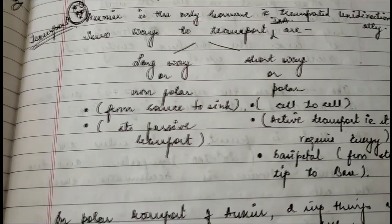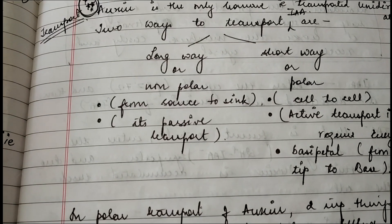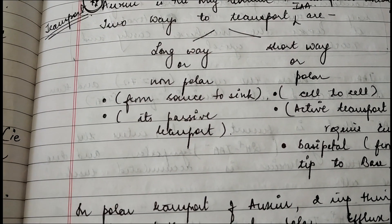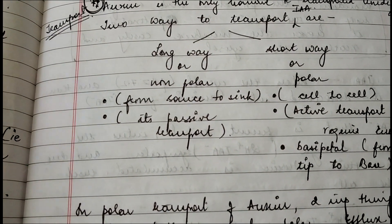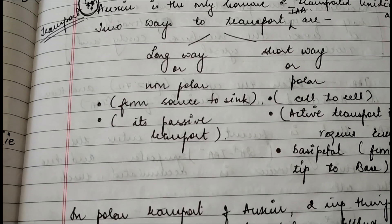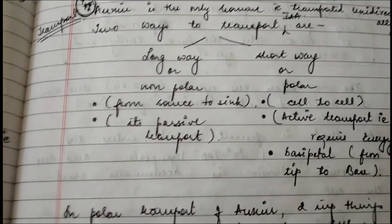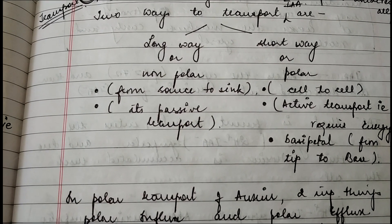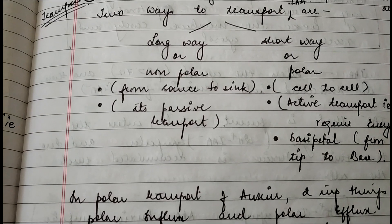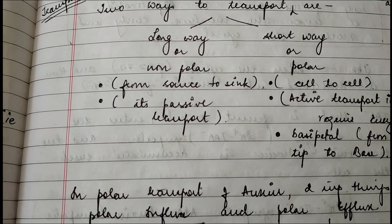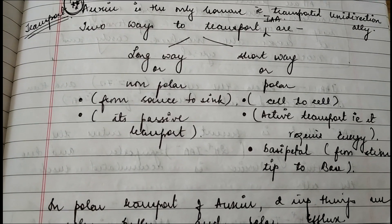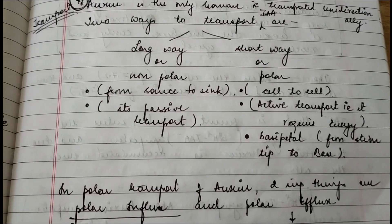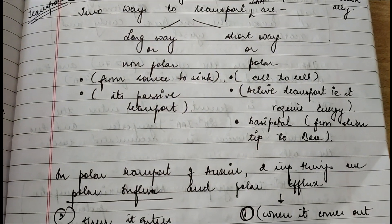The long way is referred to as non-polar transport and the short way as polar transport. The long way goes from source to sink — source being where production takes place and sink where the substance is unloaded. This is a passive transport, meaning it does not require energy. But the short-way polar transport is active transport, meaning it requires energy.